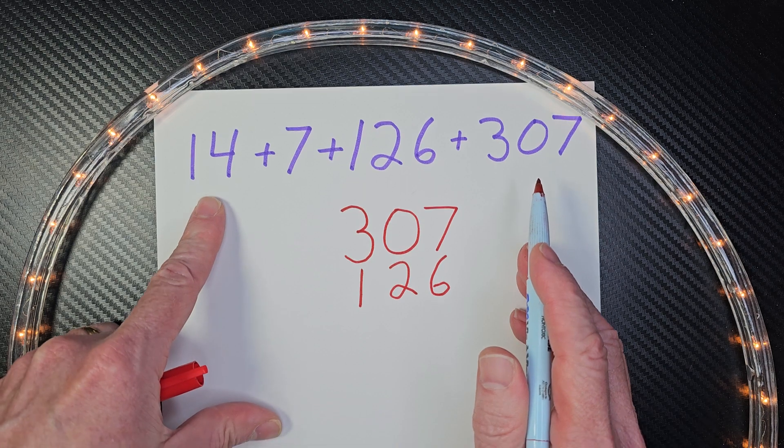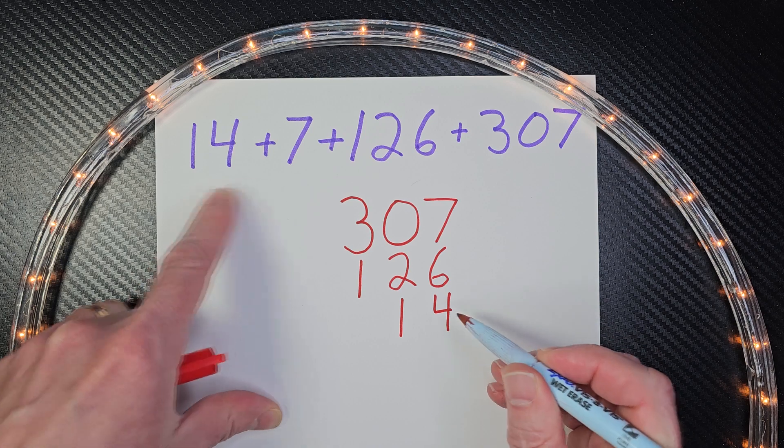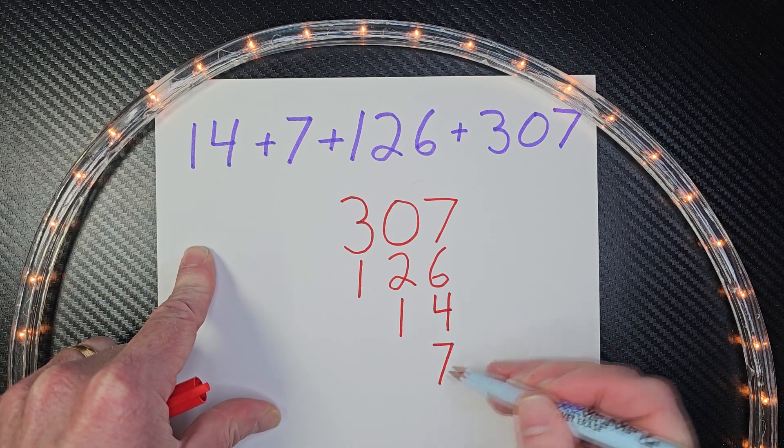Then I'm going to go over and do the two-digit number, which is 14 right here. And then my one-digit number, 7 right here.